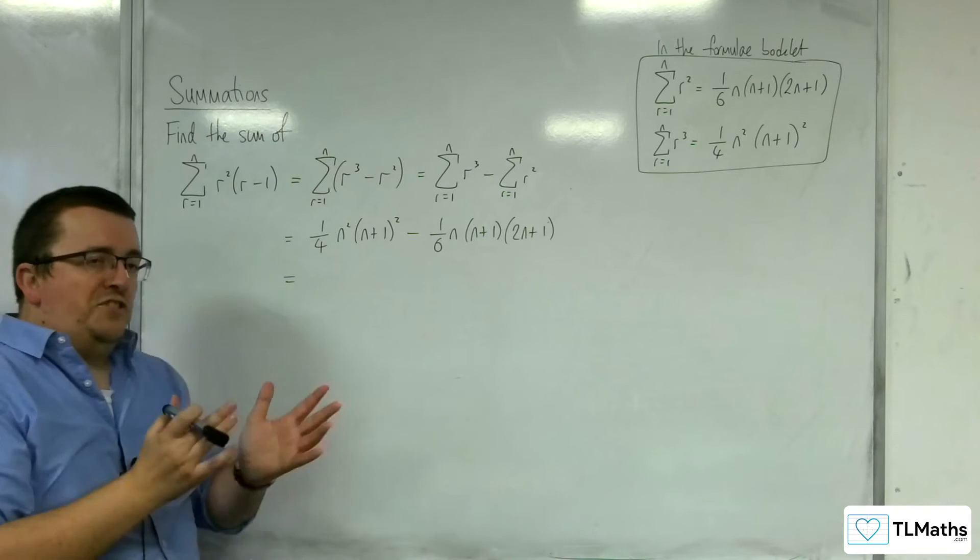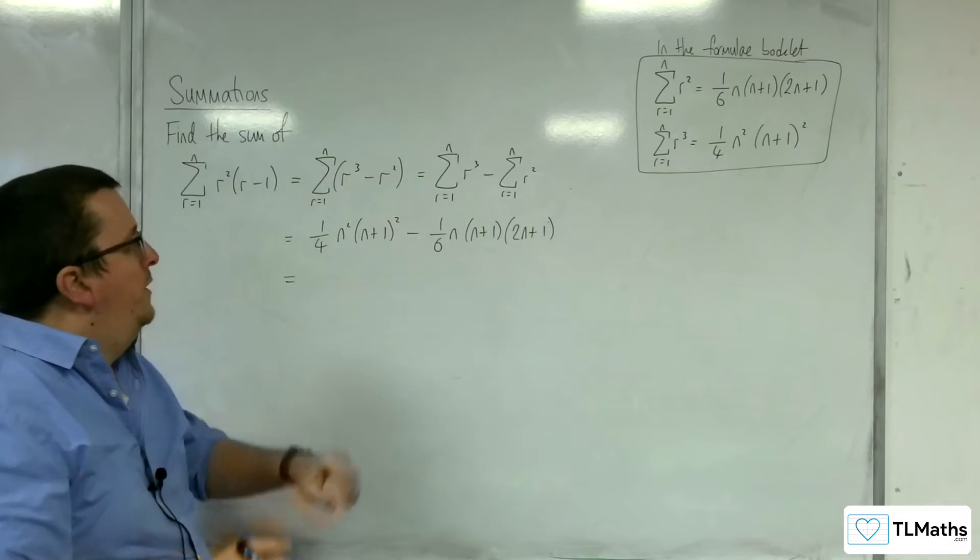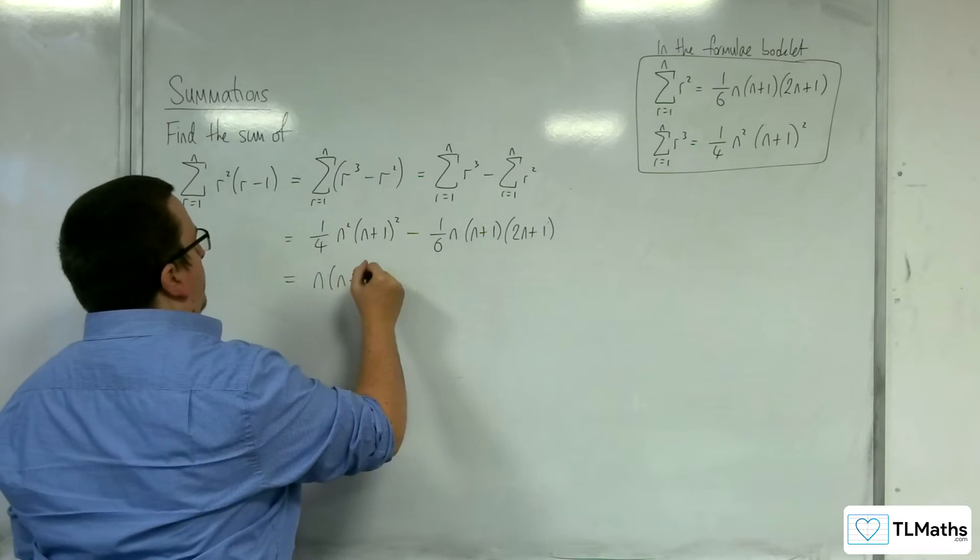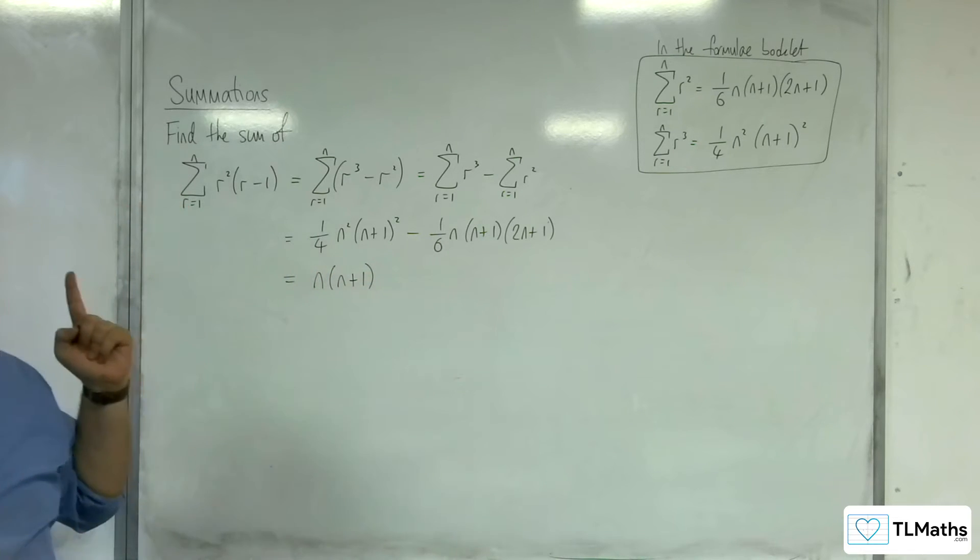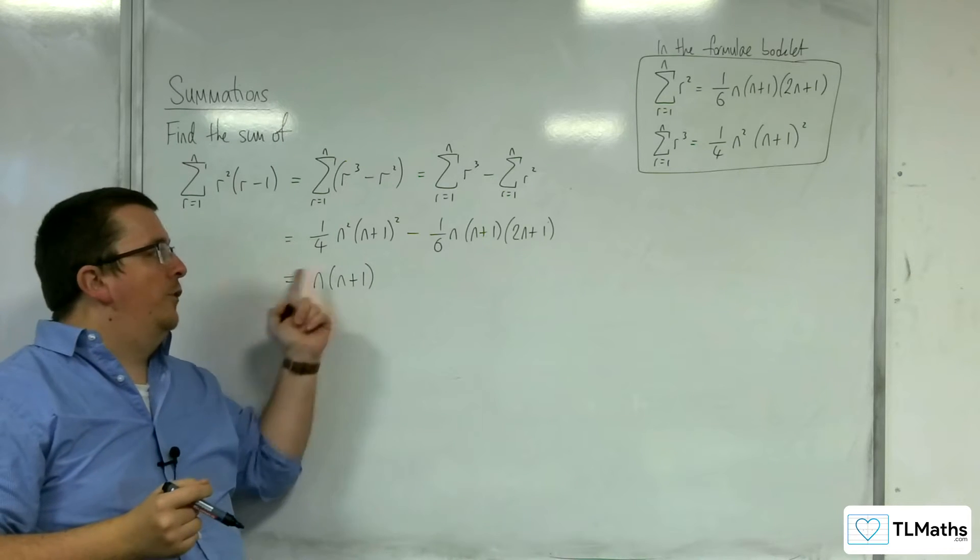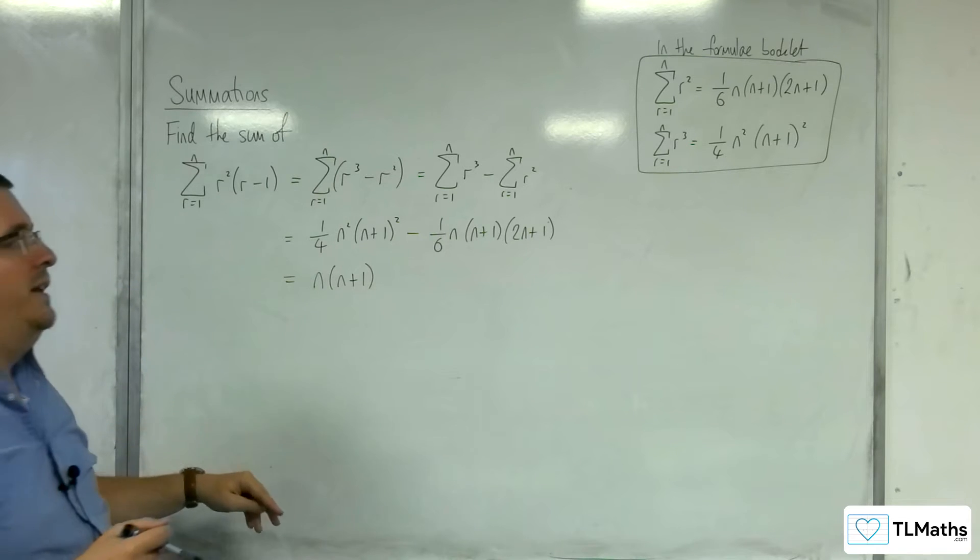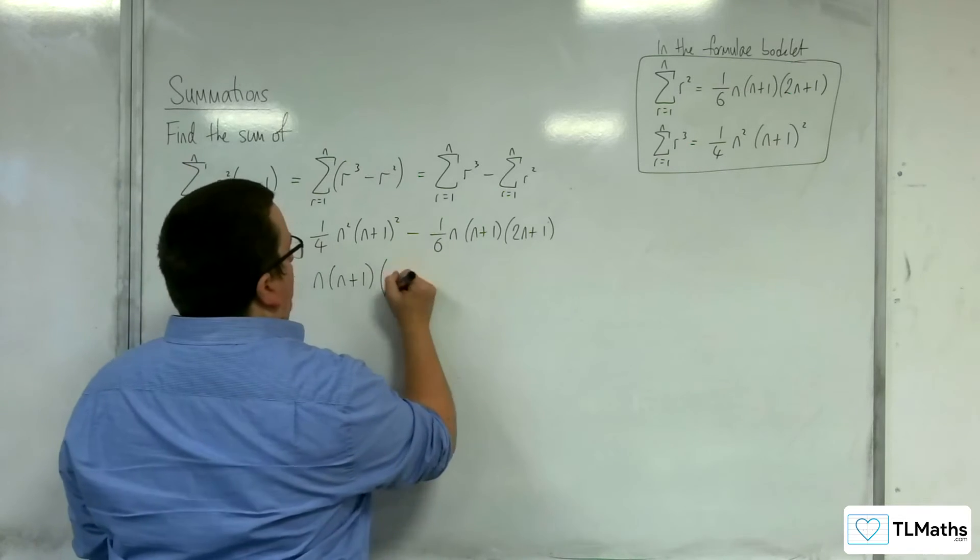OK, so what is common to both? We've got n times n plus 1. That's common to both. So I'm going to not deal with the fractions until later. I think in general that's probably going to be easier. So, let's do that.